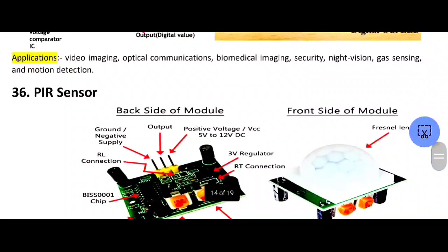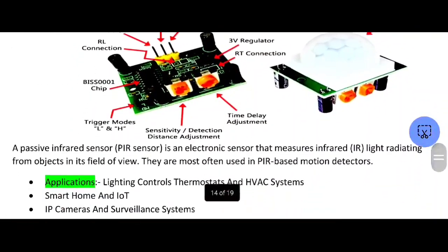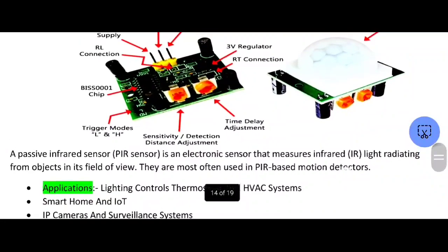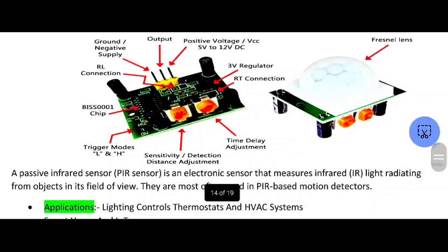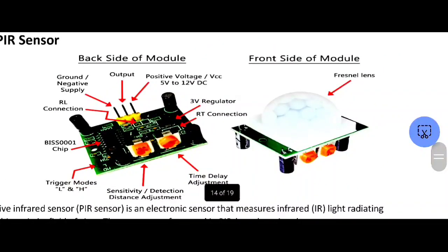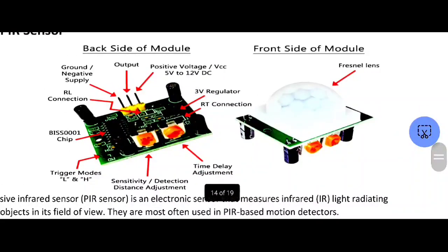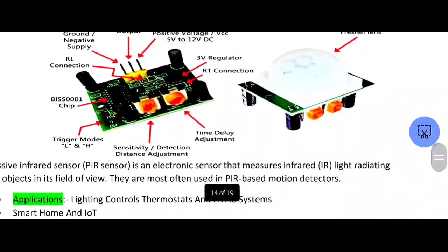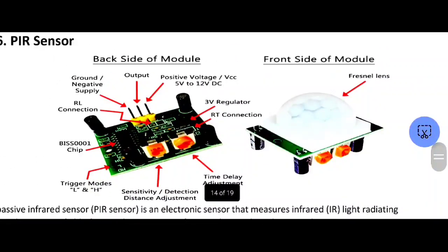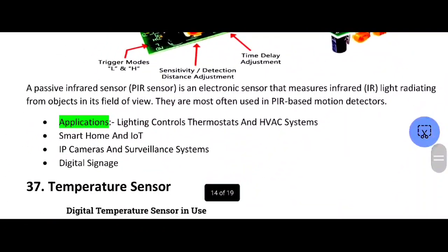Next one is the PIR sensor. PIR means passive infrared sensor — it is an electronic sensor that measures infrared light radiating from objects in its field of view. Here is the lens. The object should be moved and then the sensor should be activated to get light. The sensor is wired and the distance will automatically change.